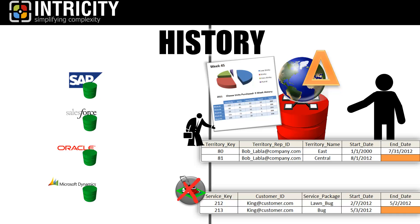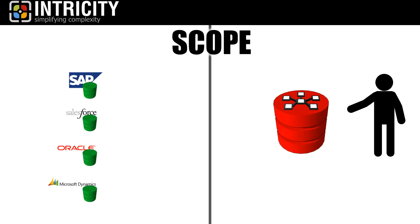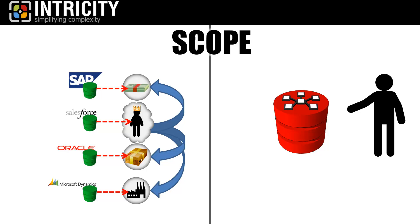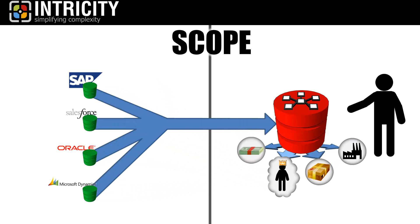The third distinction that separates a data warehouse from a transaction system is the scope of the information. A system like Salesforce.com is designed to capture your relationship with your customer. But your billing system is a completely different system altogether. So what happens when you need to analyze your sales forecast versus actual billings, or anything that ties your customer relationship with any other event in your organization? A data warehouse is designed to pull data from systems like Salesforce.com and others so an integrated view of your business can be realized.